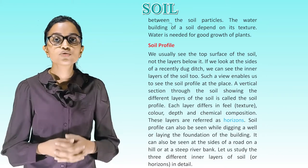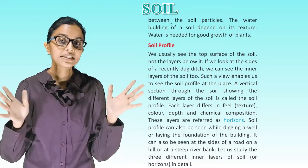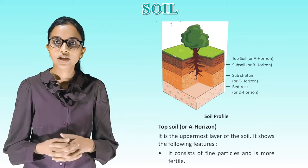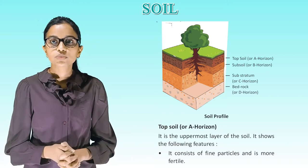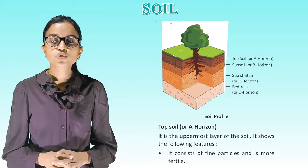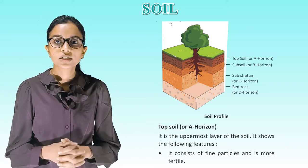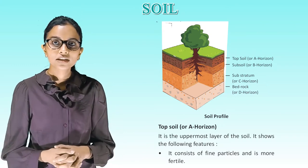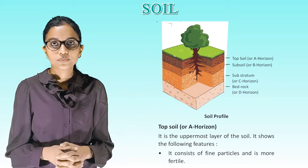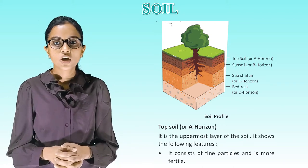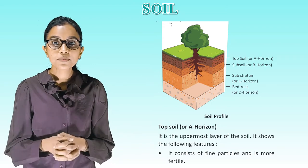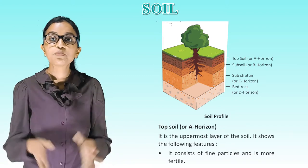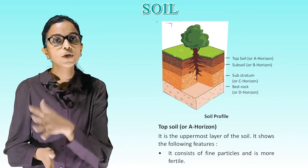Let us study the three different inner layers of soil or horizons in detail. Looking at the picture of the soil profile: on top is the topsoil or A horizon; second is the subsoil or B horizon; third is the substratum or C horizon; and the last level is bedrock or D horizon.